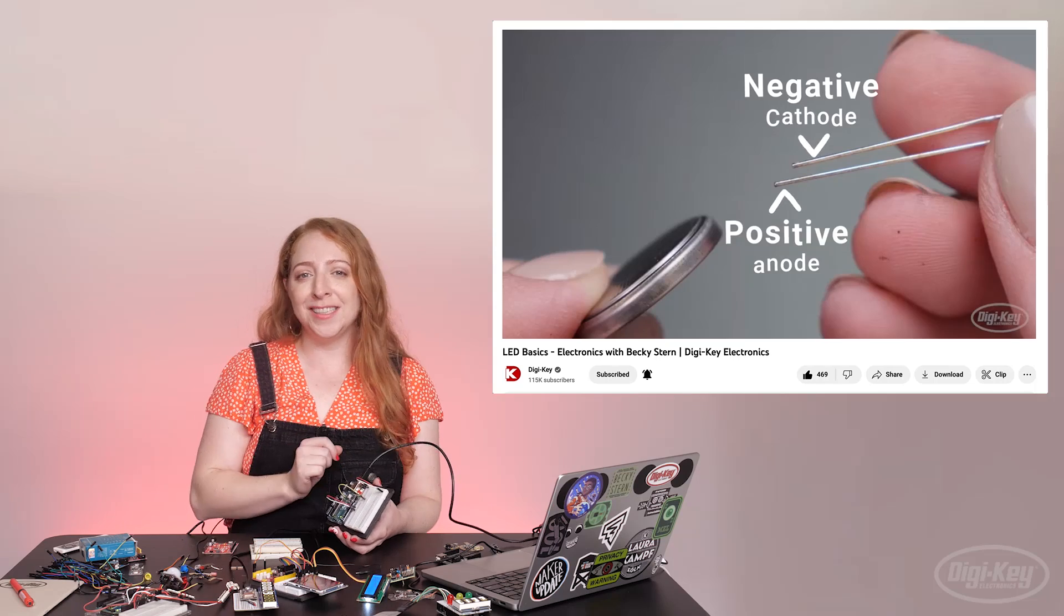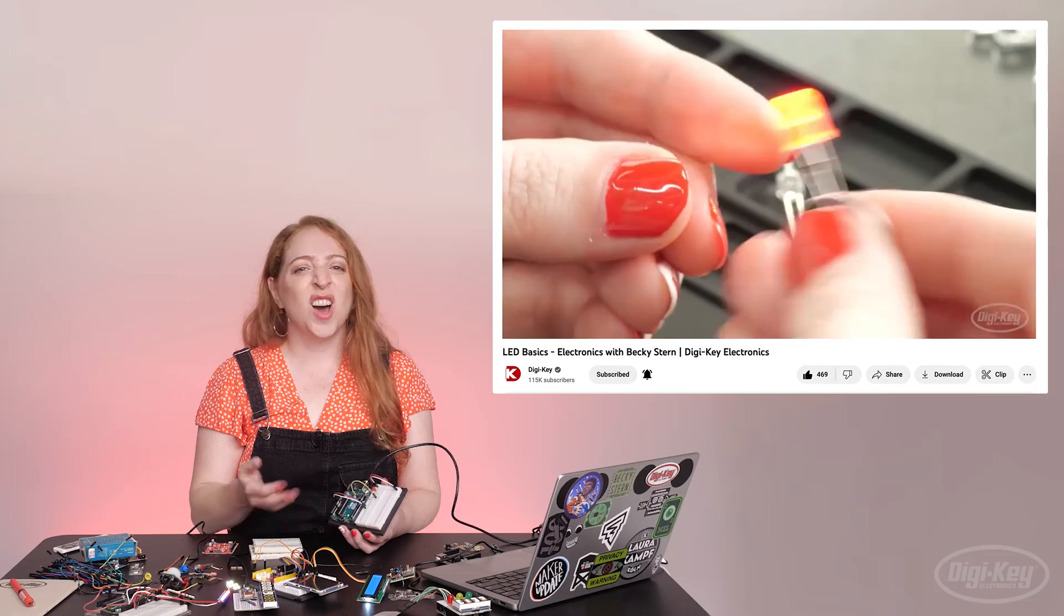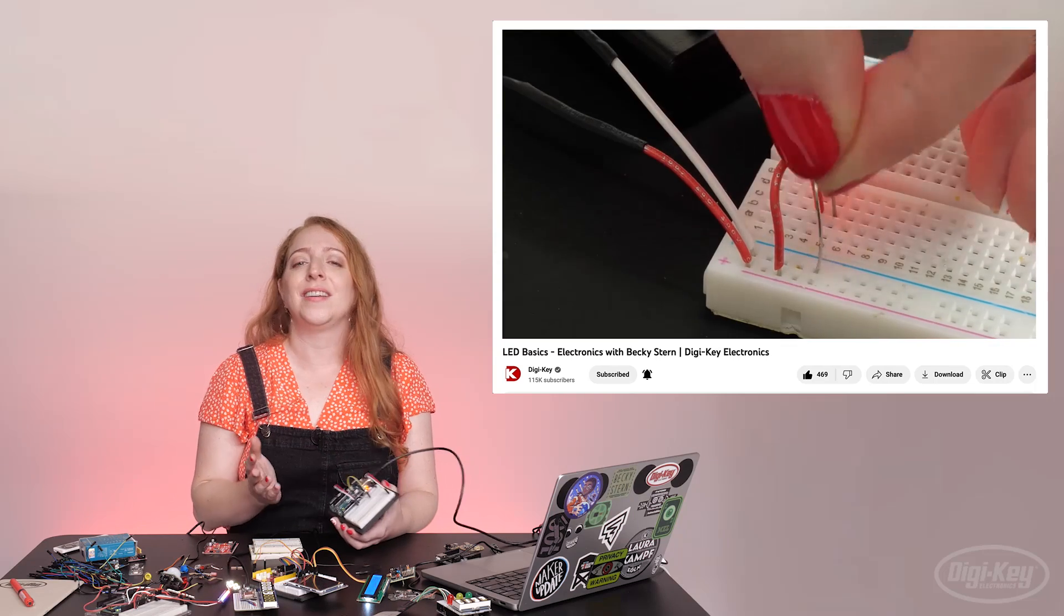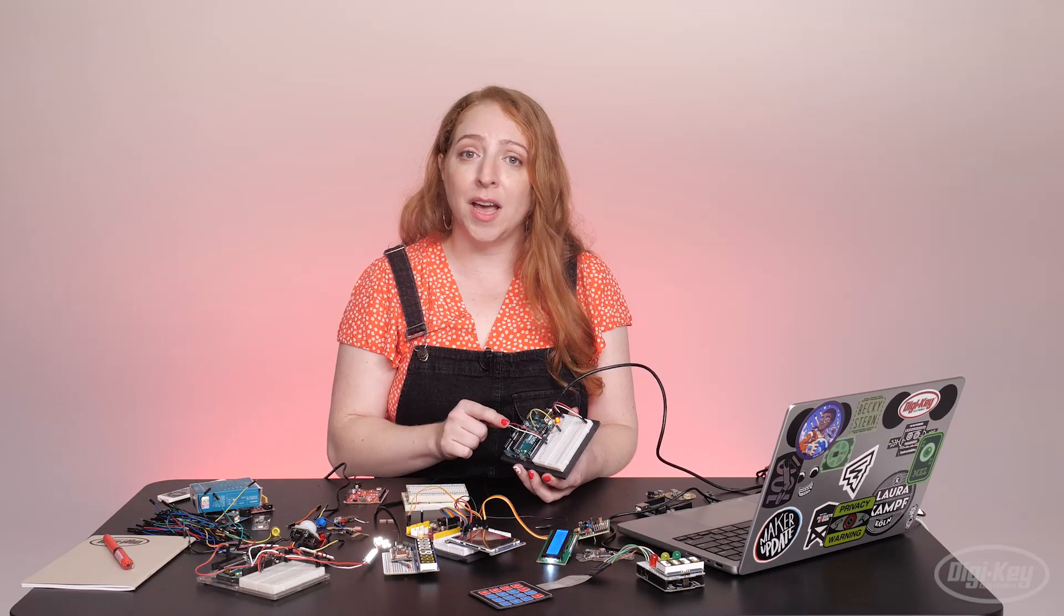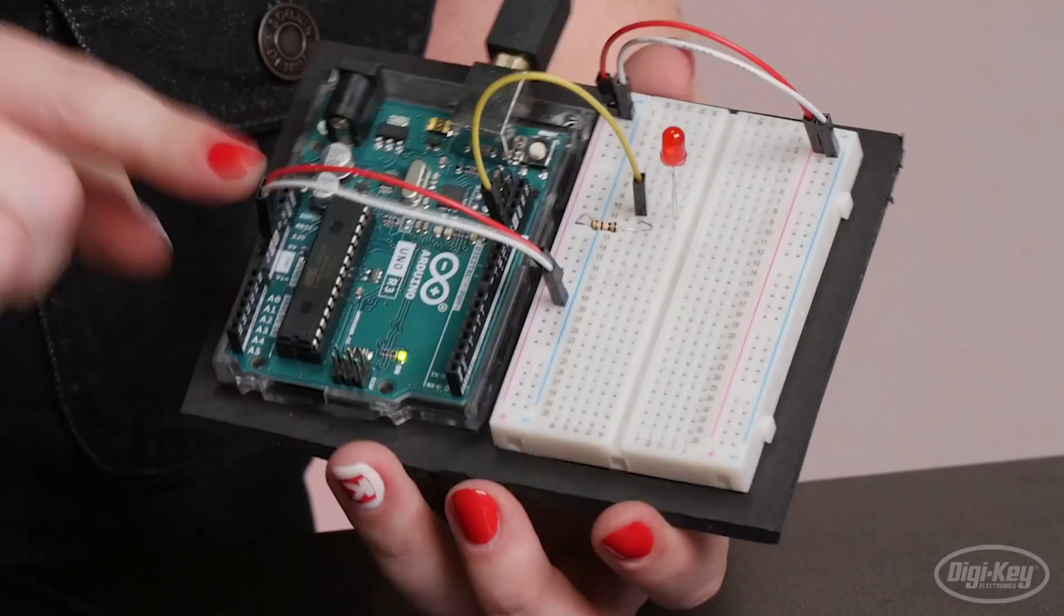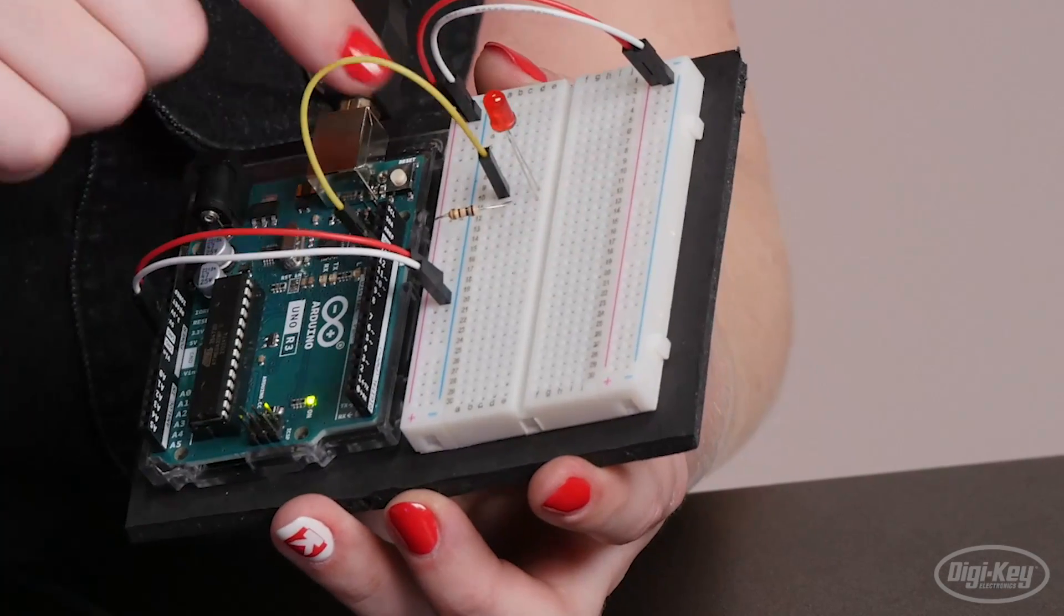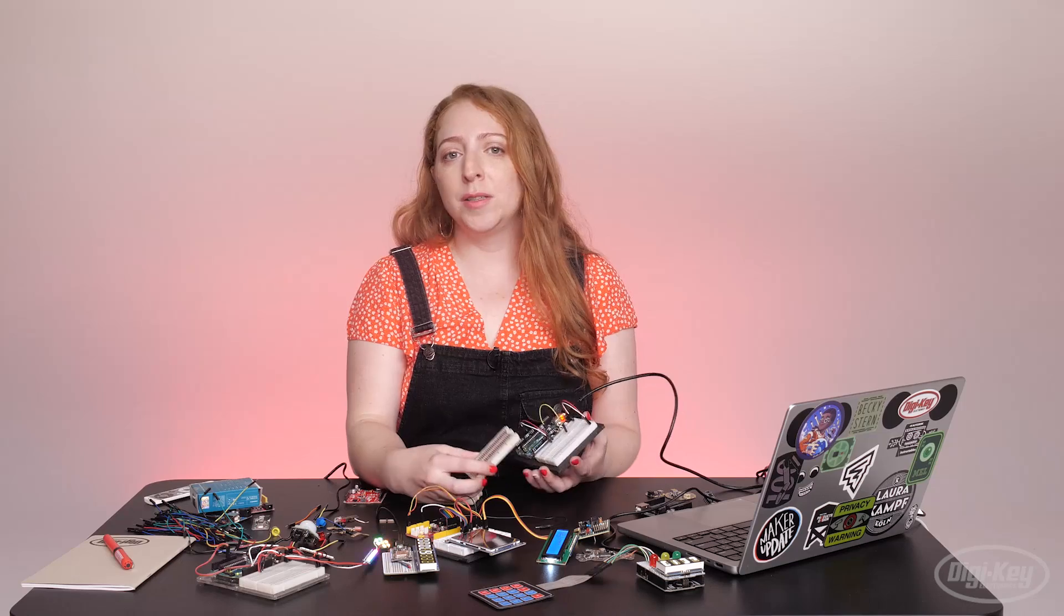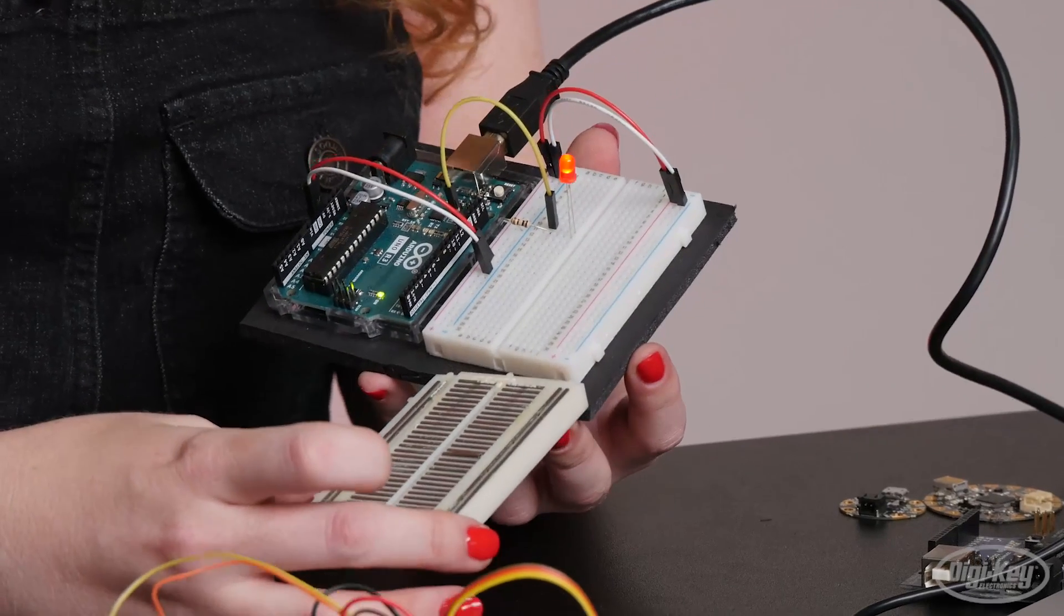We covered LED basics in a previous episode if you want to learn more, but for this circuit, a quarter watt resistor, any value from 100 ohms to 1000 ohms will work great. I've got 5 volts and ground from the labeled pins on the Arduino over here to the bus bars on the solderless breadboard. These bus bars run the length of the breadboard on either side, so you can easily access power and ground.